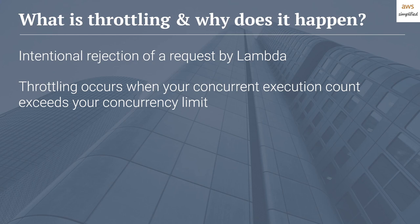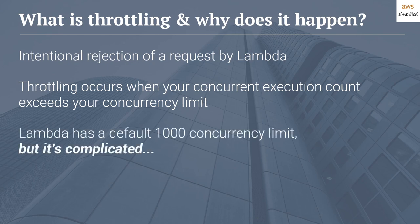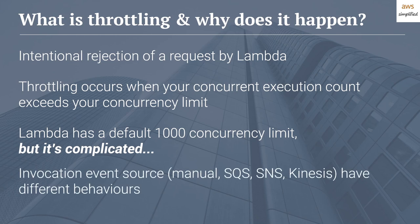This naturally leads to the next question: what are the configured limits? Lambda has a default 1000 concurrency limit specified per region within an account. It gets a bit more complicated when you have multiple Lambda functions in the same region and same account, which we'll cover shortly. Also, depending on the invocation event source — whether it's manual, SQS, SNS, Kinesis, Dynamo, or something else — they all have different behaviors when encountering throttling exceptions.